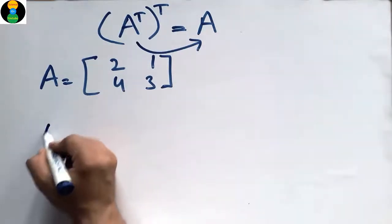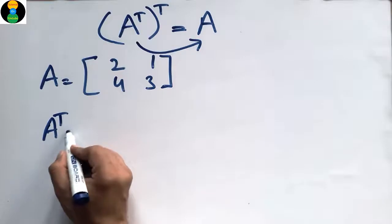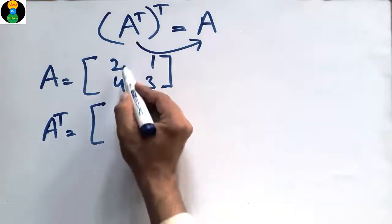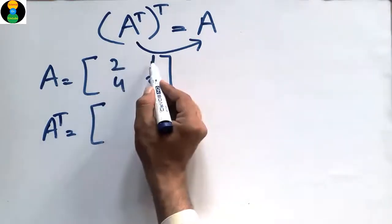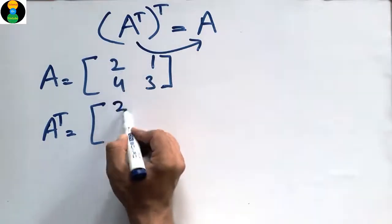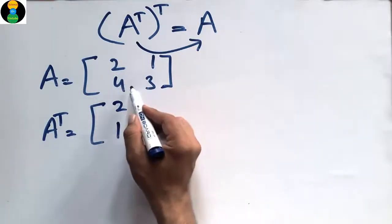This is A. Now the A transpose will be, by changing the rows into columns - this is [2, 1], I will change this into the column. This is another row [4, 3], so I will change into the column [4, 3].